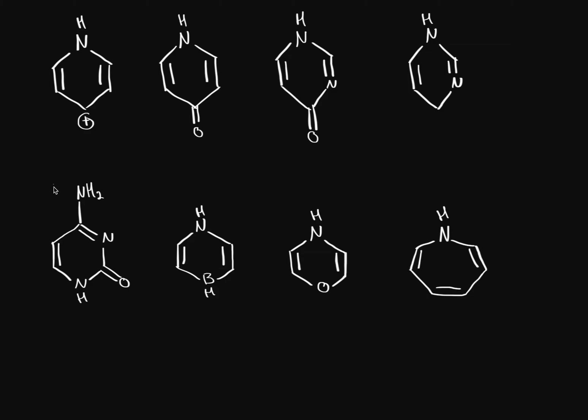What we're going to do in this practice is classify each nitrogen as either basic or not basic. First, we're going to see if there is resonance stabilization, and whether that resonance stabilization will make the ring aromatic. If it does make it aromatic, it is preferred, and therefore the nitrogen's lone pair will not be available for acting as a base — so it'll be a weak base or just not basic at all.